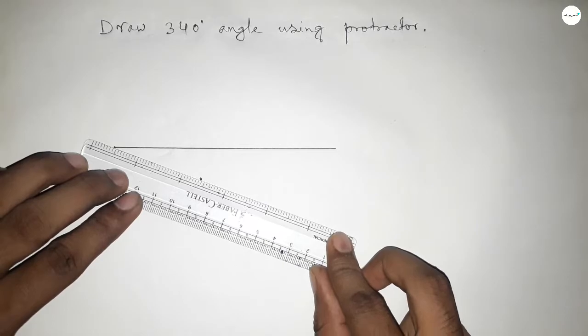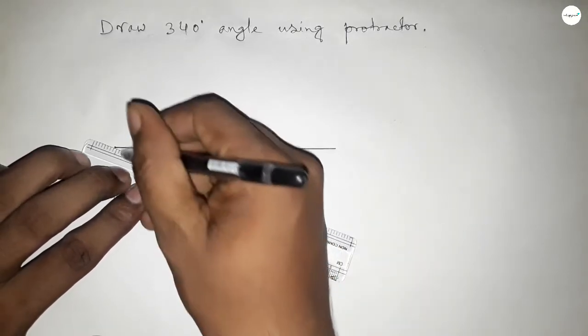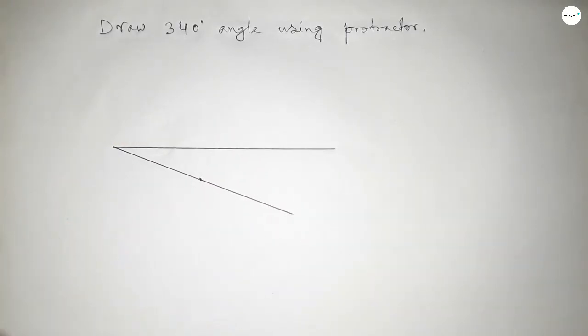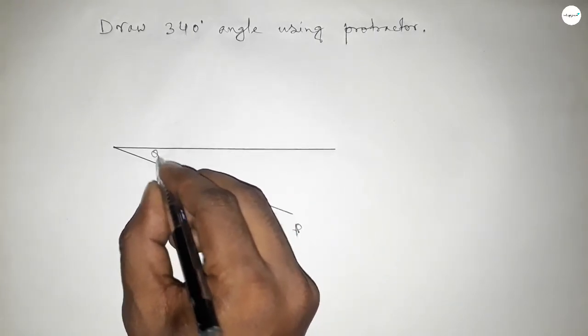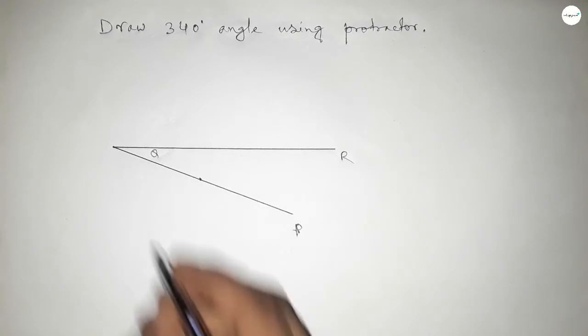So by joining 180 degrees plus 160 degrees, we can get a 340 degree angle. So this is angle PQR.